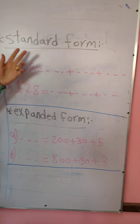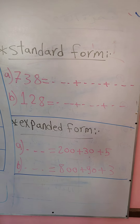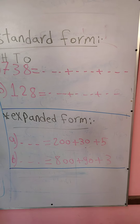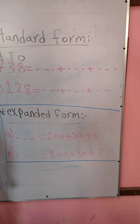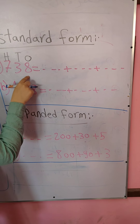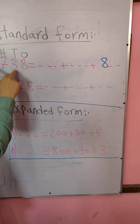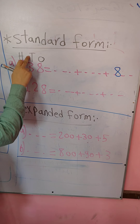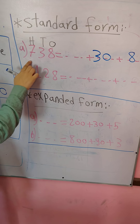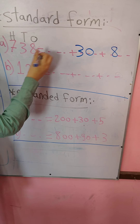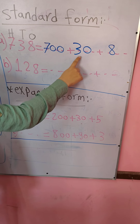We have standard form, question 4. I'll write H, T, O. This example is 738. Number 8 is in the ones place, so I write number 8 without any zero — the value is 8. Number 3 is in the tens place, so I write 3 with one zero — the value is 30. Number 7 is in the hundreds place, so I write 7 with two zeros — the value is 700. So: 700 plus 30 plus 8.